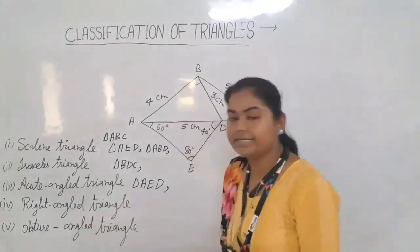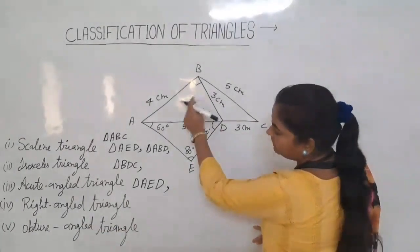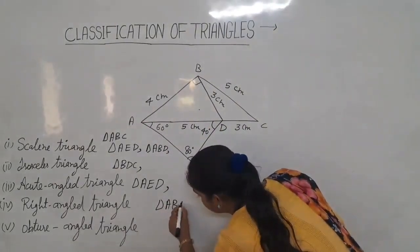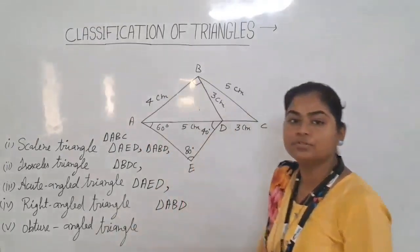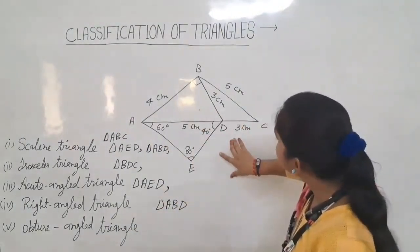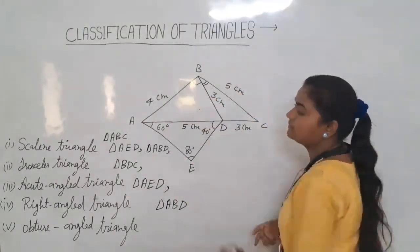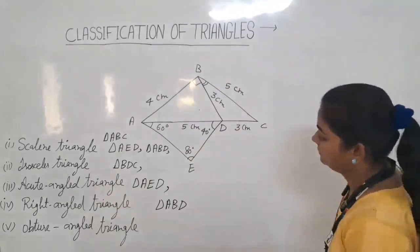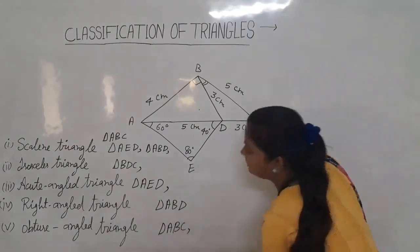Next we have a right angle triangle. Right angle means one angle is 90 degrees. Here, angle is 90 degrees, so triangle ABD is a right angle triangle. And last, we have an obtuse angle triangle — obtuse means one angle is greater than 90 degrees. Angle B is greater than 90 degrees, so triangle ABC is an obtuse angle triangle. Triangle BDC also has an angle greater than 90, so it is also an obtuse angle triangle.